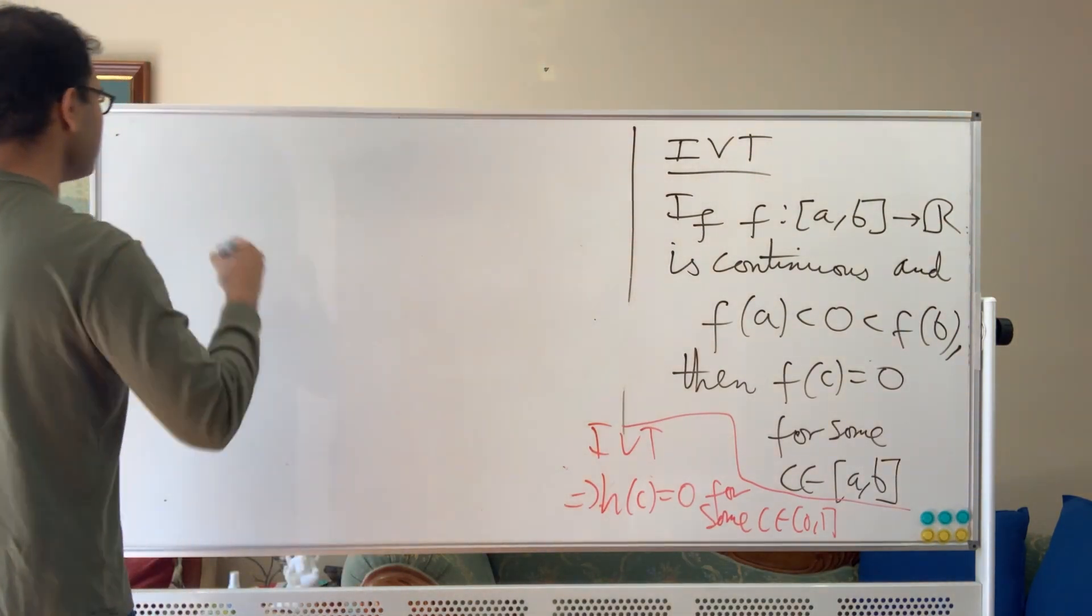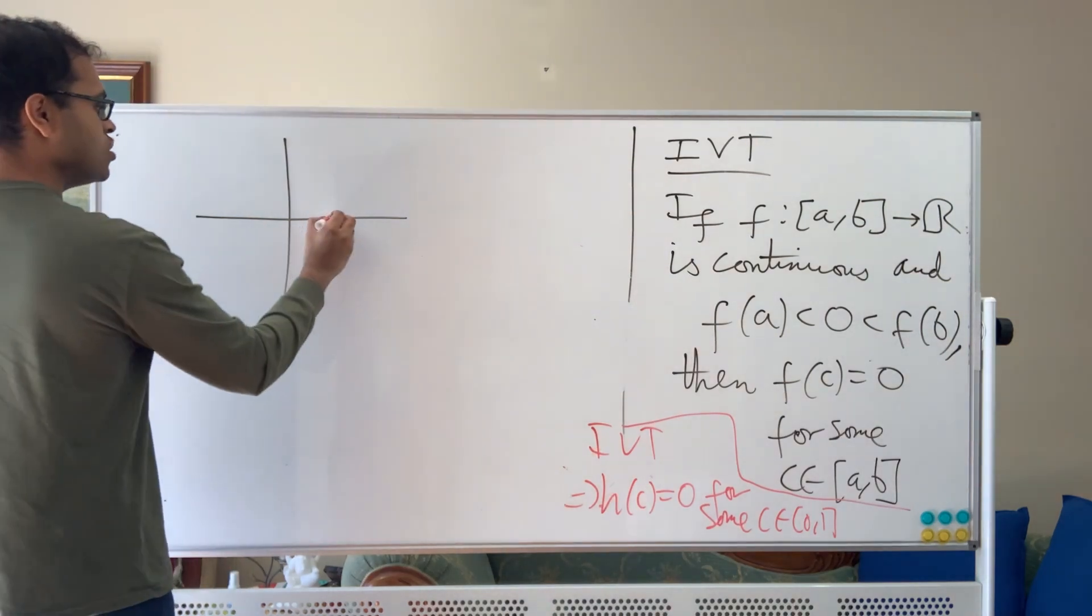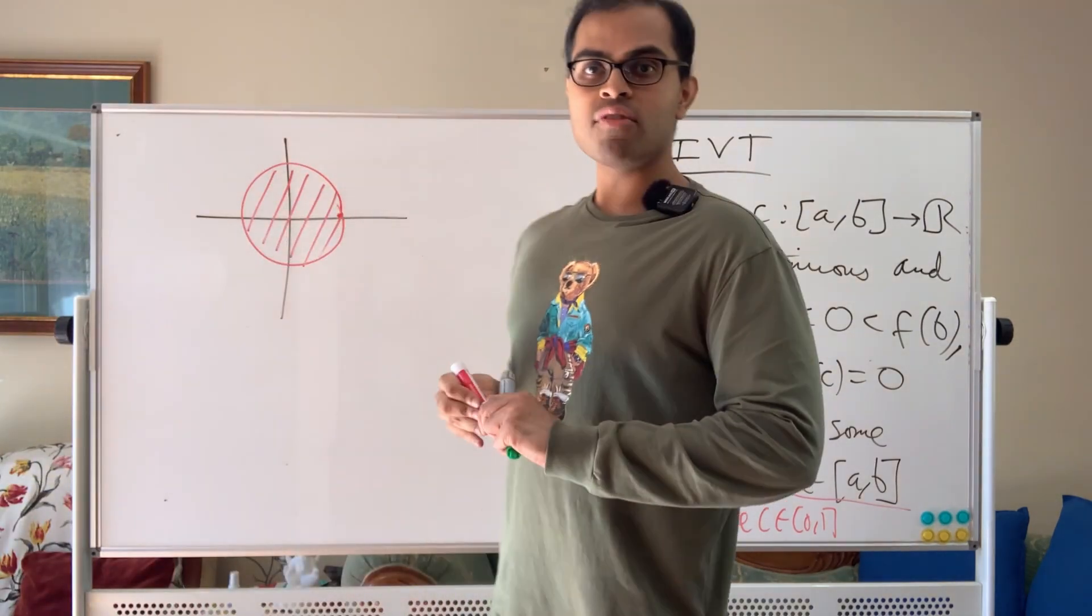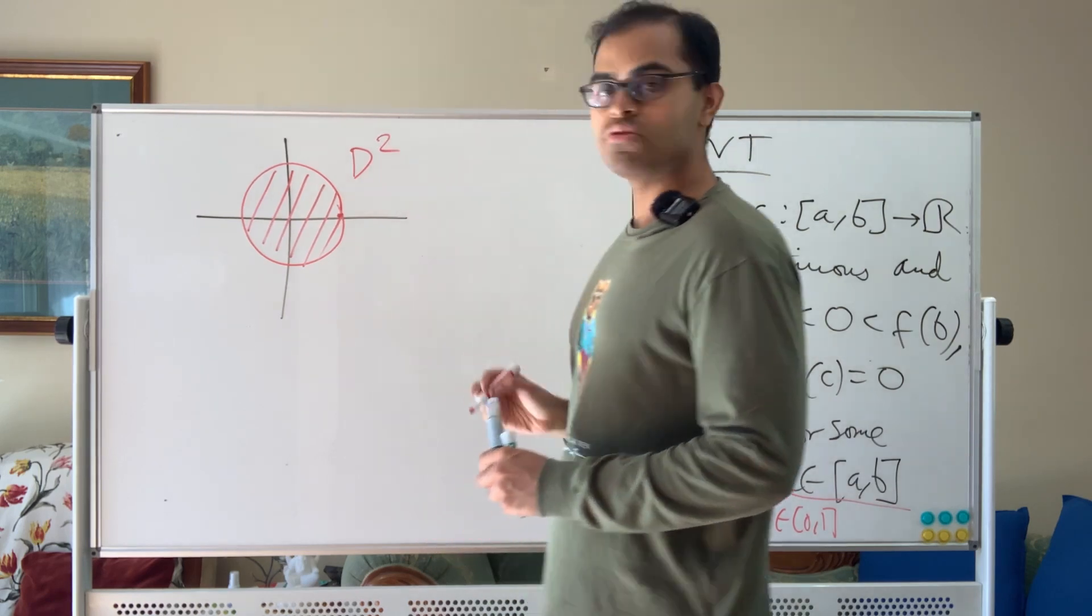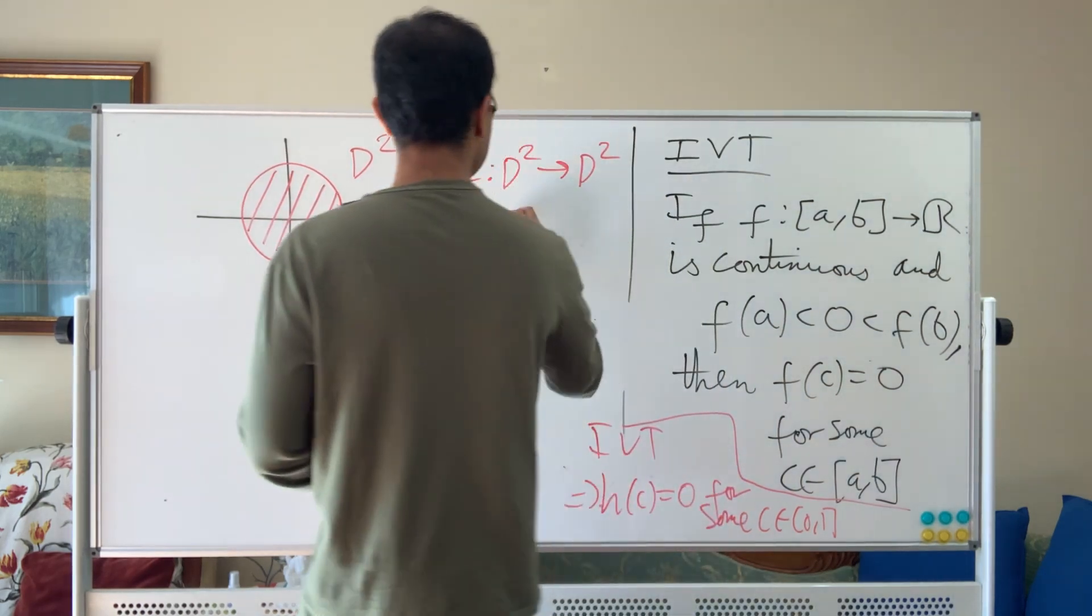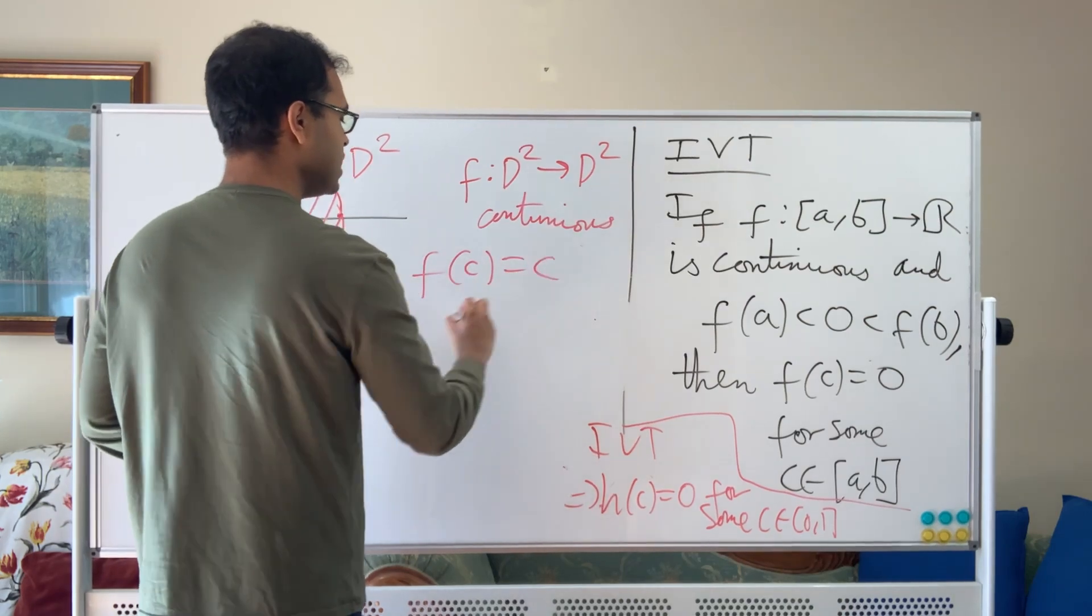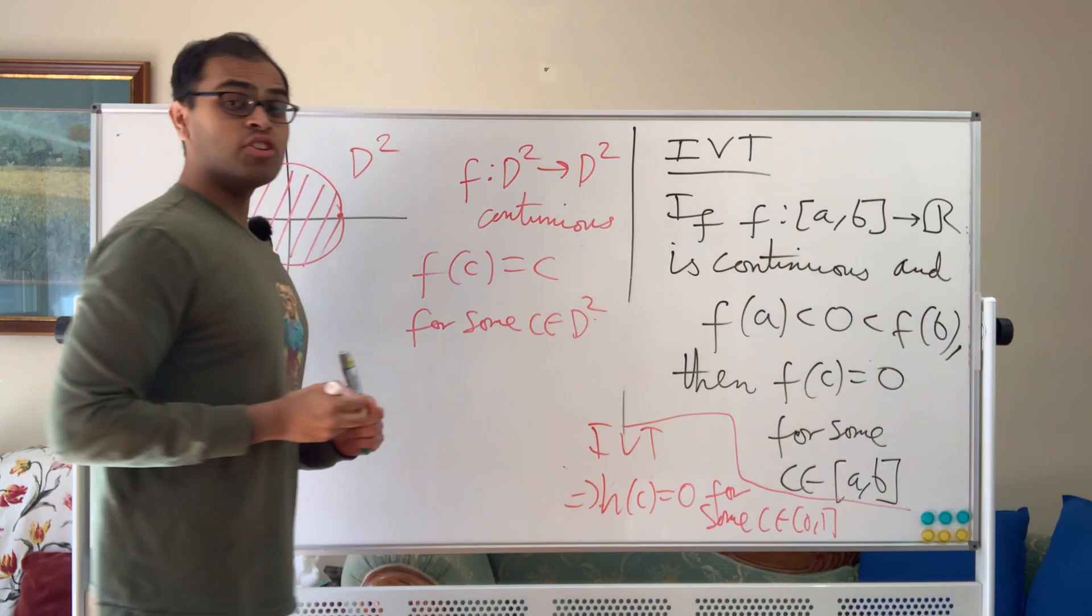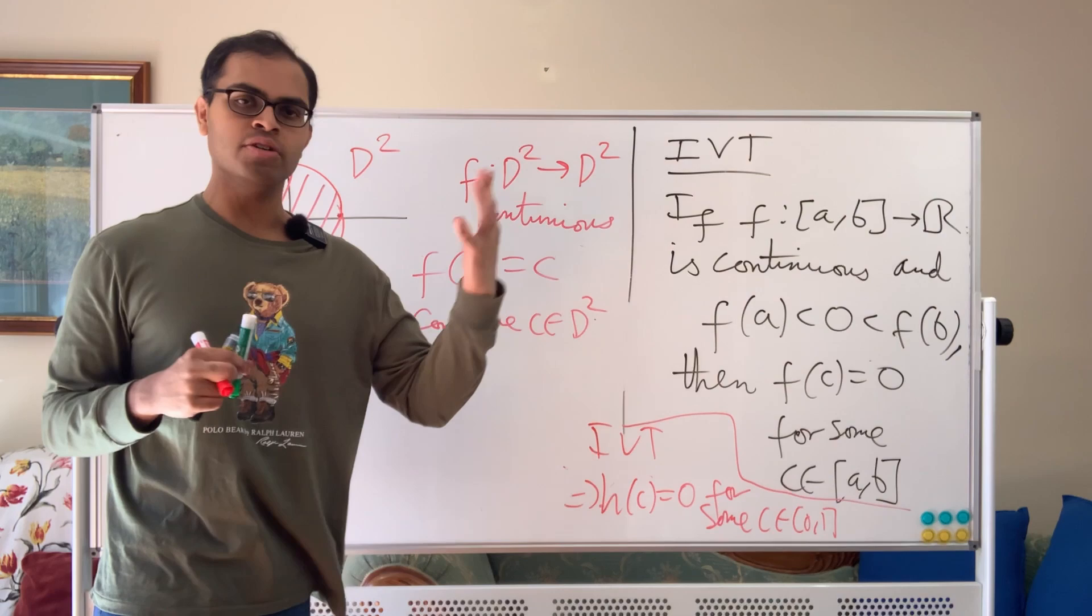It basically says that if you have a function, imagine in the plane, you have the unit disk. This is all points at a distance less than or equal to 1 from the origin, a unit disk bounded by the unit circle. If you have a continuous function f from D2 to D2, then the Brouwer fixed point theorem tells you that f(c) equals c for some c inside the disk. That's what the Brouwer fixed point theorem says. It's super hard, it's next-level math. You have to develop a new theory to solve this.